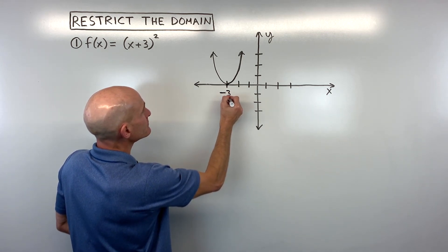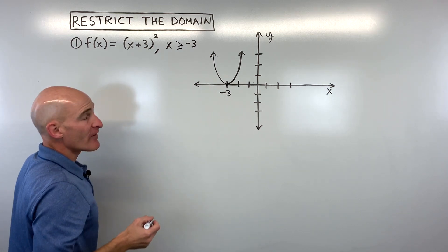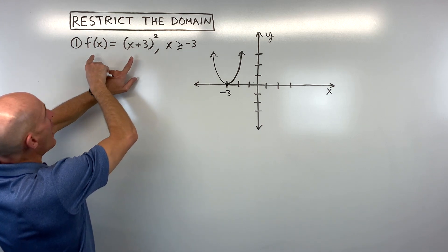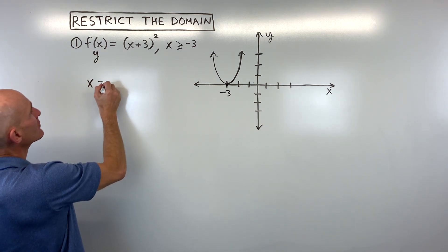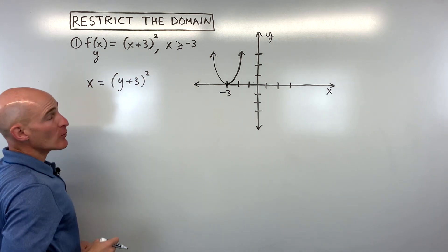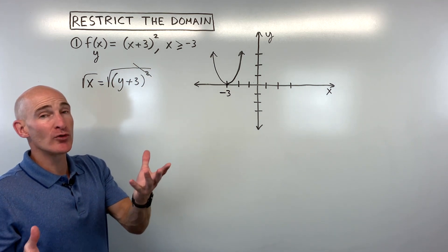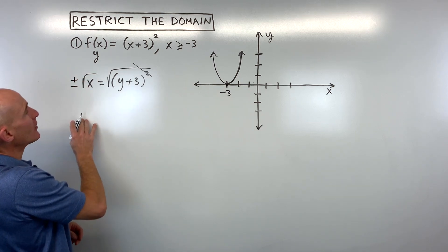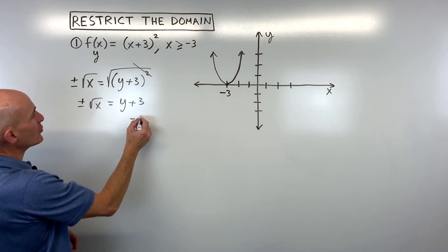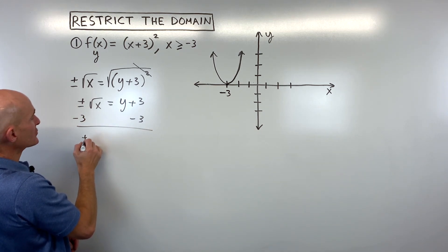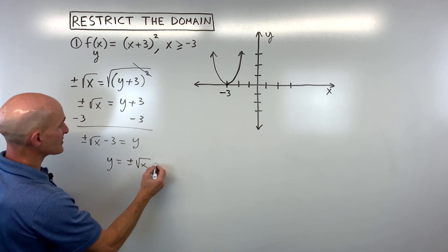Here at negative 3, if we restrict the domain and say x is greater than or equal to negative 3, and we find the inverse, we interchange the x and the y and solve for the new y. When you think of f of x, you can think of it as the output or y value. So we interchange input and output, then solve for the new y. We take the square root of both sides — the square and the square root cancel. When you take the square root of both sides you get plus or minus, so y plus 3 equals plus or minus the square root of x. Subtracting 3 from both sides gives us y equals plus or minus the square root of x minus 3.